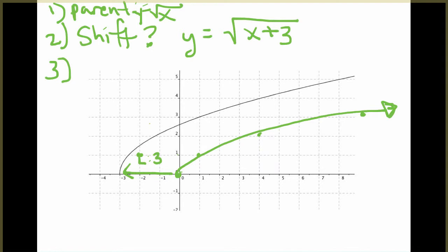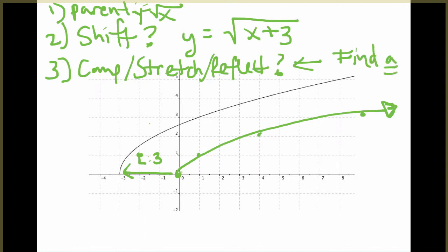But you'll notice like if we shifted this point left 3, it would have been right through this point and our graph doesn't quite go through that. So we have to now see if there is a compression or a stretch or a reflection. This one doesn't look like there's a reflection at all, but we have to check for that. The way we check for that is we find our, I always call it our a value. And a is this leading coefficient that goes in here.